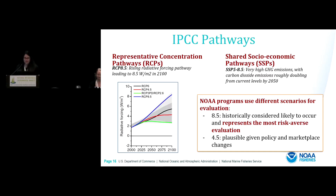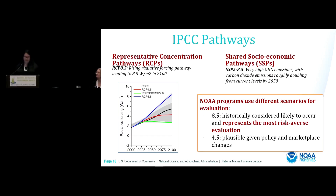The NOAA mitigation policy lets individual programs decide which pathway is best when evaluating mitigation, but this depends on which authority you're working under. Currently, the ESA evaluates using an RCP of 8.5, which is considered the most risk-averse in these models. For EFH, the range can be about 4.5 to 8.5, where 4.5 is considered the most plausible outcome.